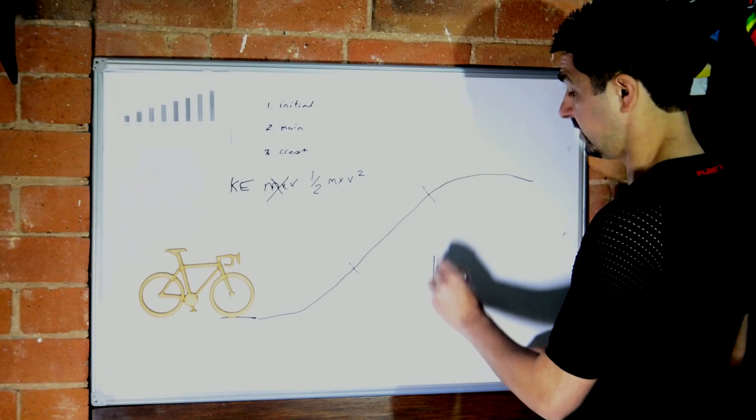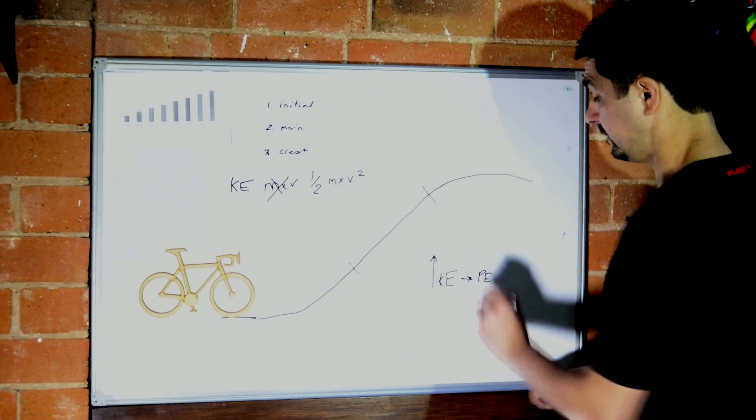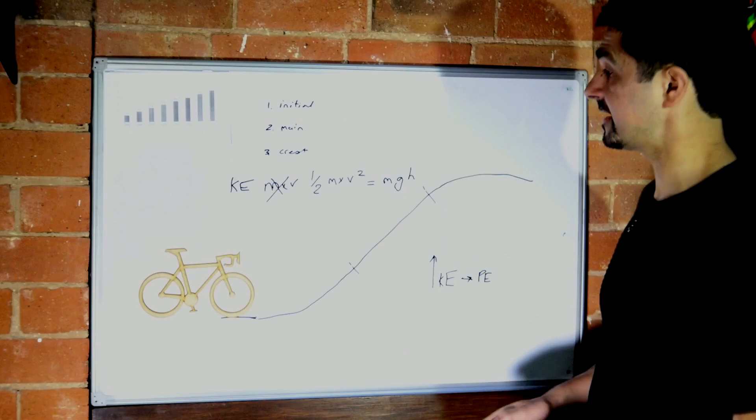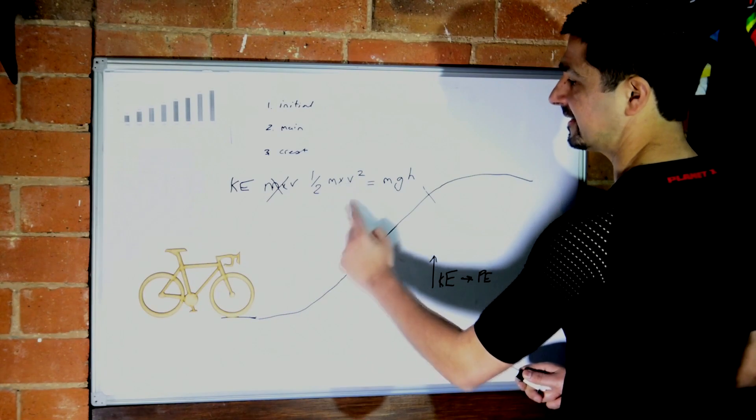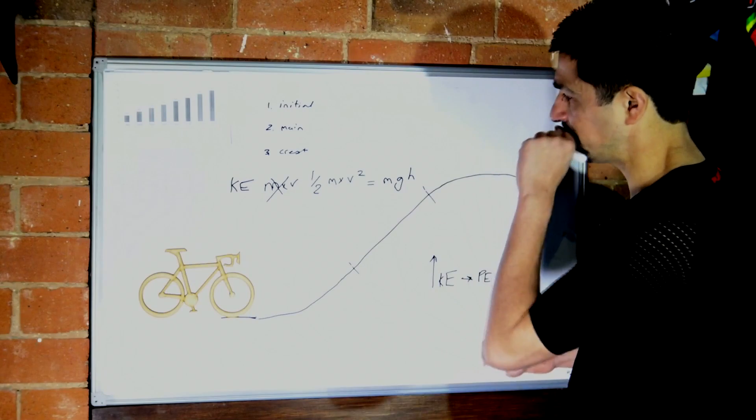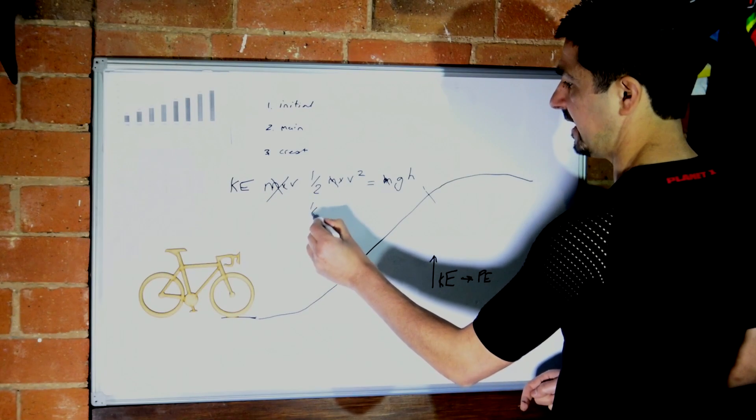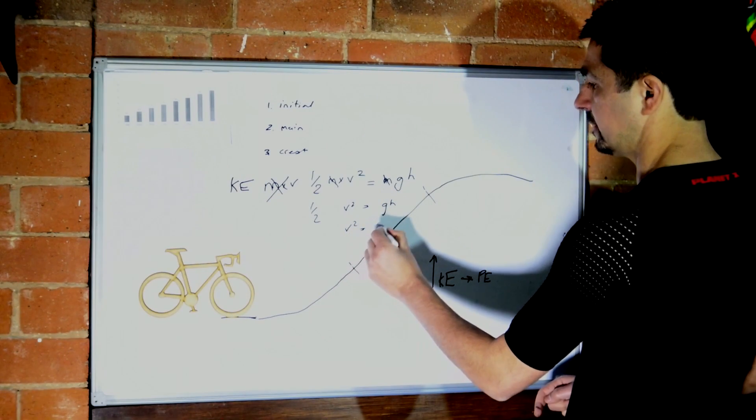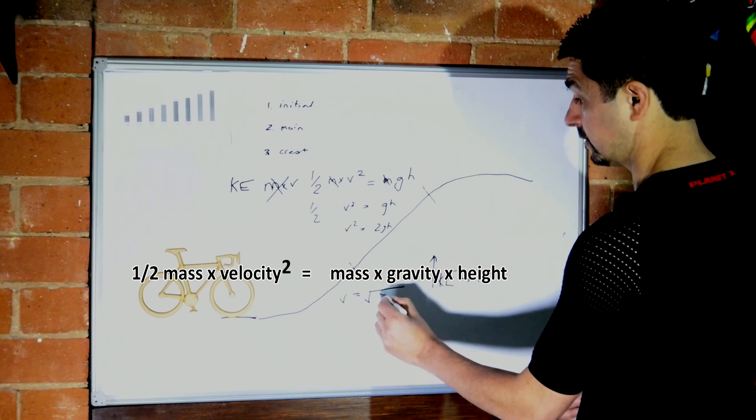This represents the kinetic energy of the cyclist. And we know that going uphill, you convert that kinetic energy into potential energy. The potential energy is given by the formula mass times the gravitational constant times the height, the height gained. We can work out the conversion from the cyclist's velocity squared into the height of the hill. Cancel out the mass from each side: half v squared equals gh. Times by 2 on each side: v squared equals 2gh. Square root each side: velocity equals the square root of 2gh.